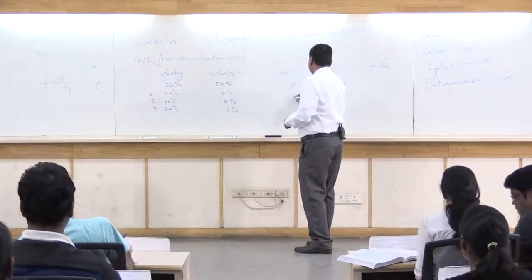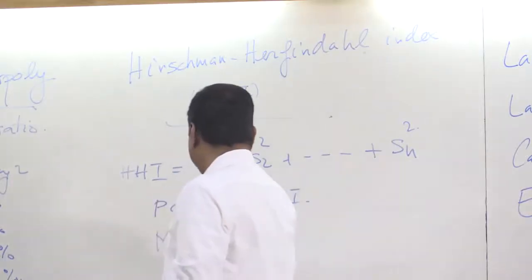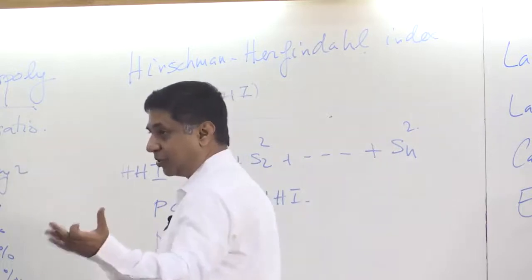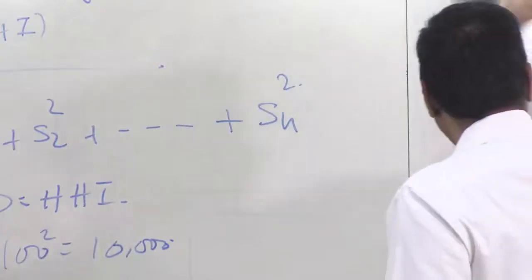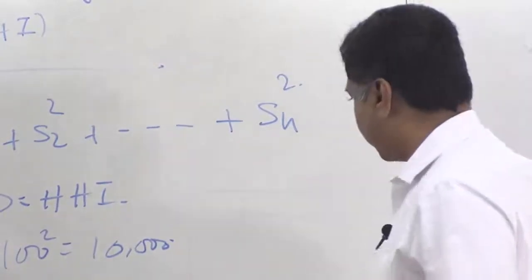How much for a monopoly? It would be 100 percent, right? The monopolist has 100 percent of the market. 100 square equals 10,000. This is one way of thinking about concentration.